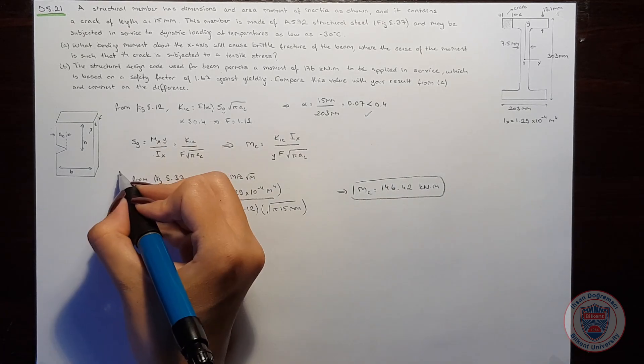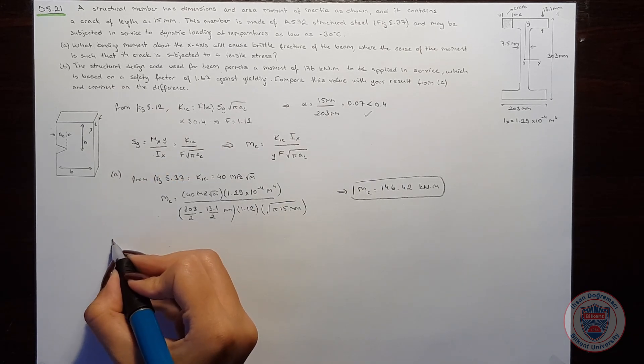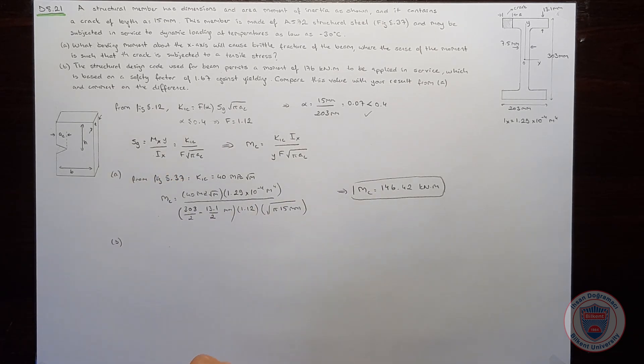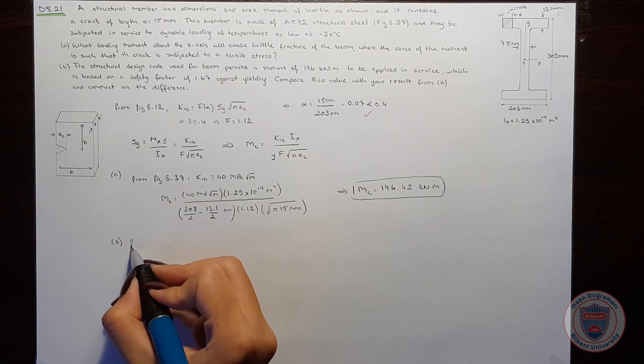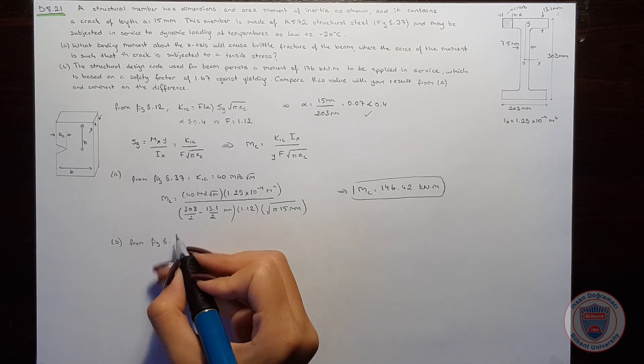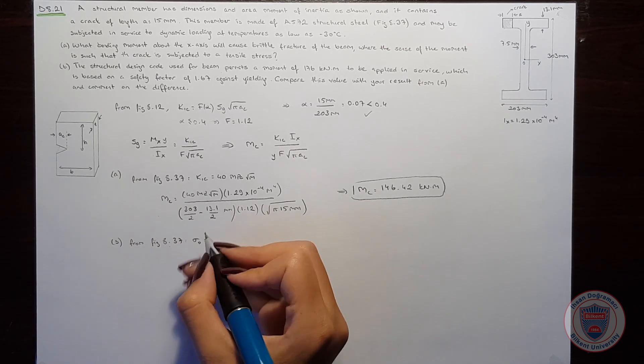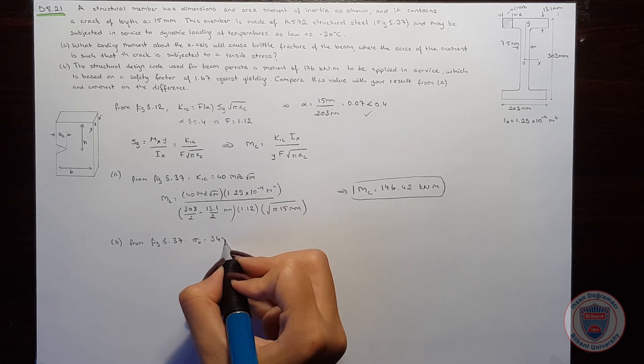This is the answer for part A. And for part B, we will also need the yielding strength. So again, from figure 8.37, the yield strength is 345 MPa.